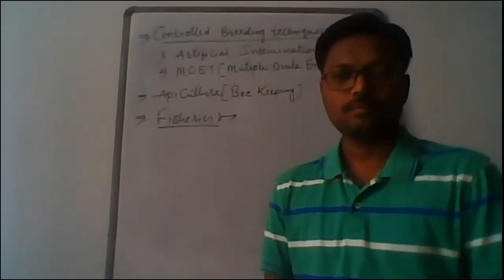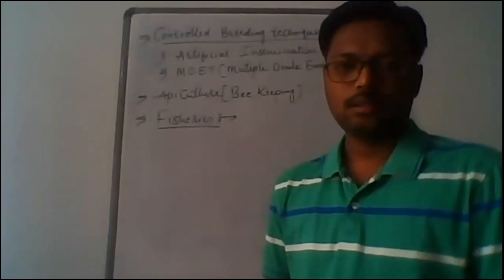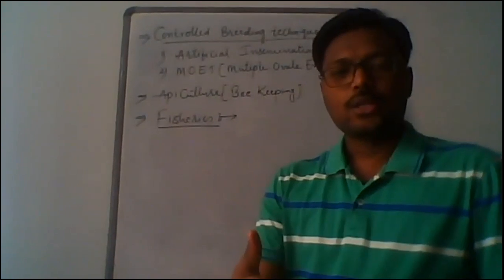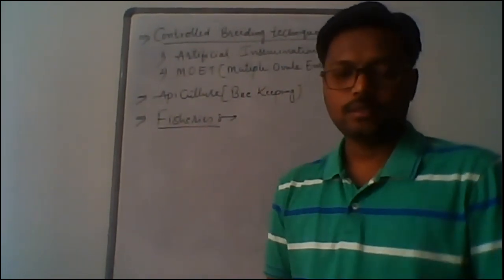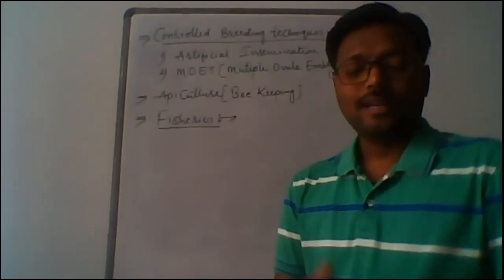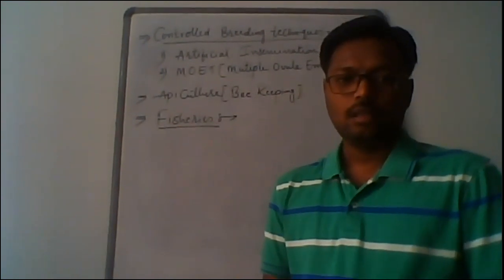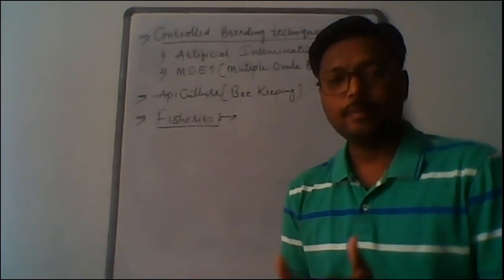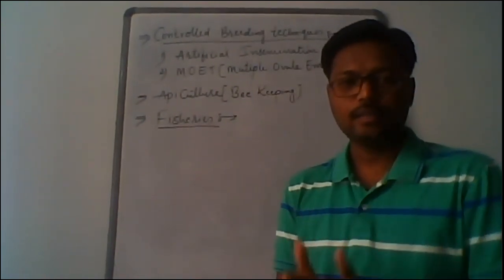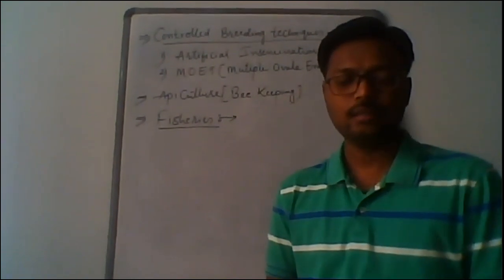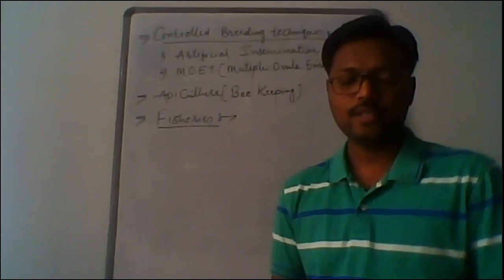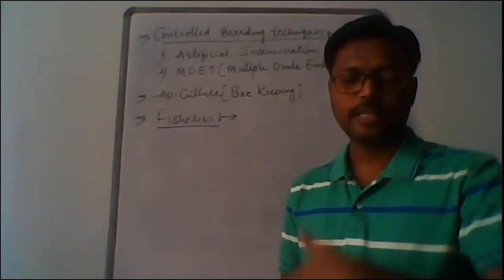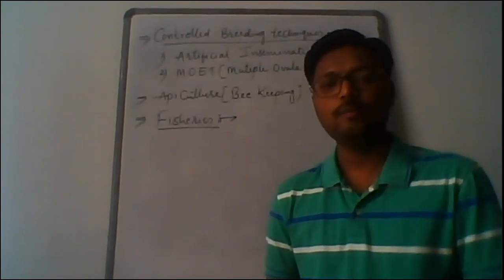Good morning students. Yesterday we started the chapter 'Strategies of Enhancement in Food Production' and discussed the introduction of animal husbandry, livestock, dairy farm management, and poultry farm management. We also covered animal breeding methods — inbreeding and outbreeding — where outbreeding includes hybridization techniques such as outcrossing, crossbreeding, and interspecific hybridization, with their respective examples.